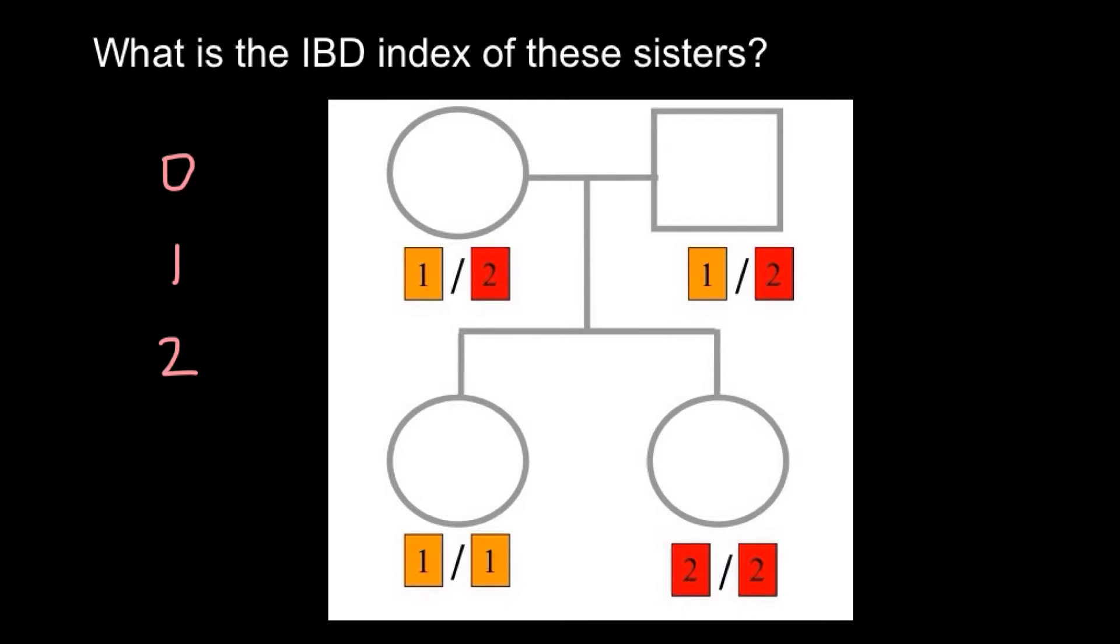There is another important thing to note: even if two loci have the same alleles, it's not necessarily identical by descent. In many cases, this would be identical by state.